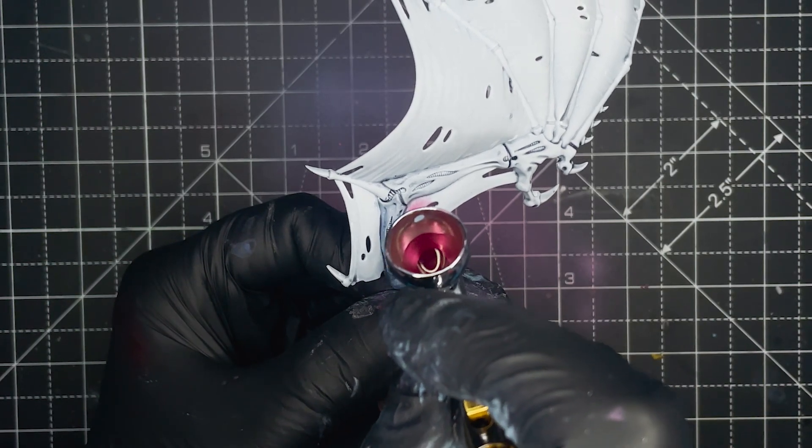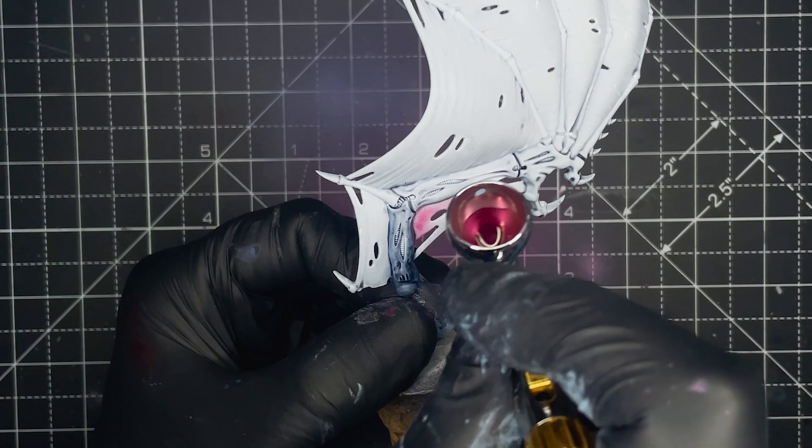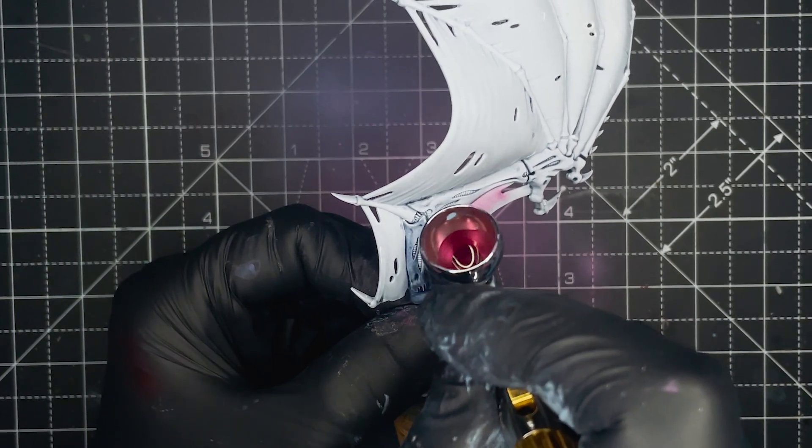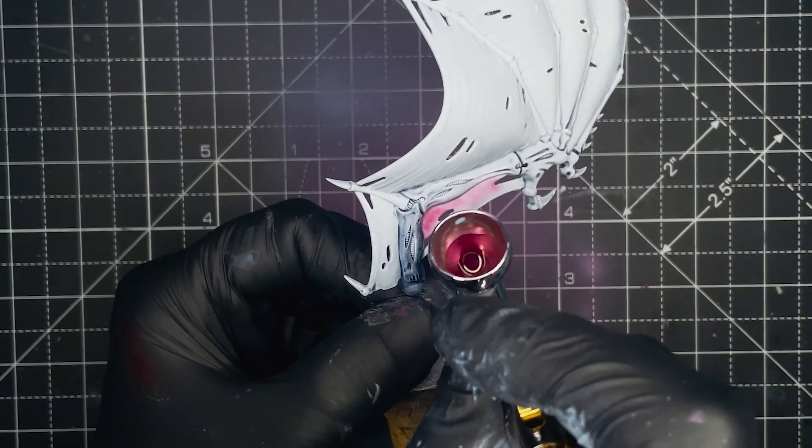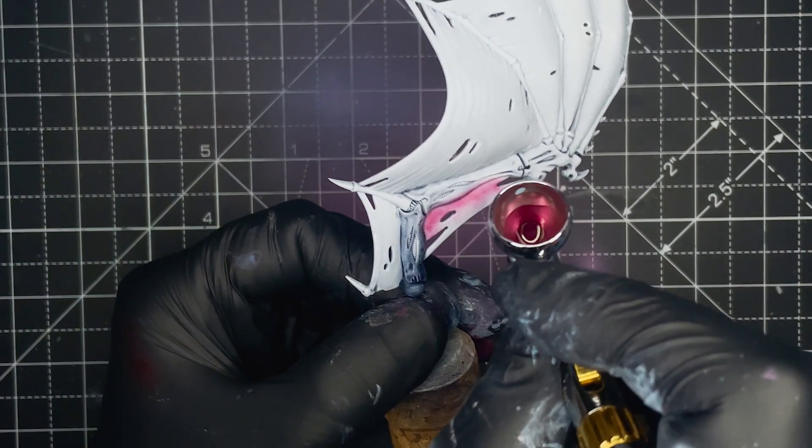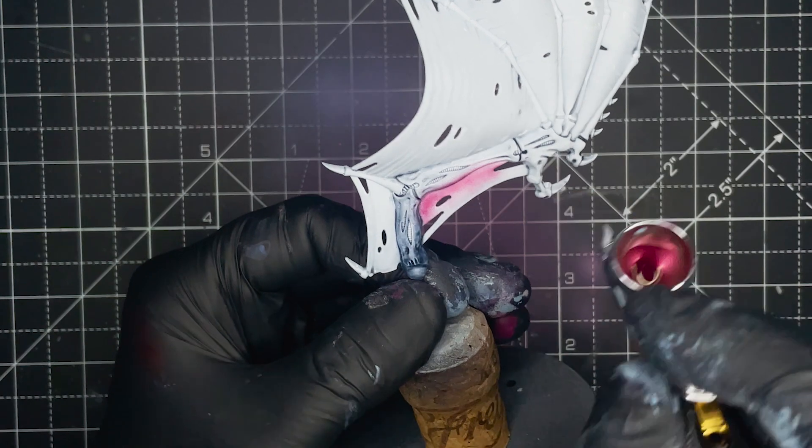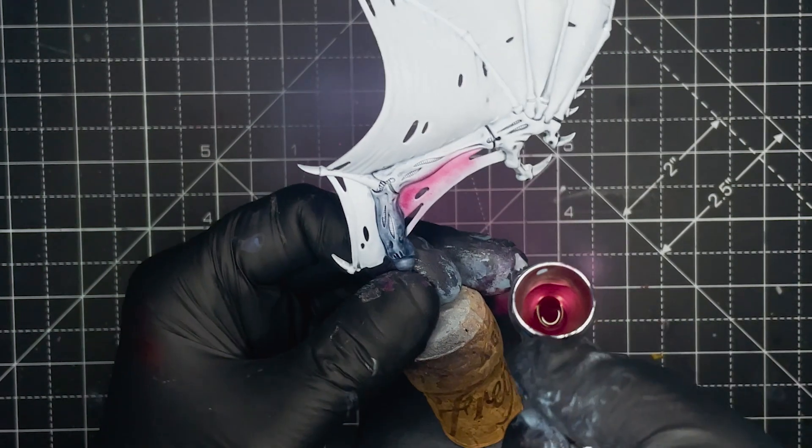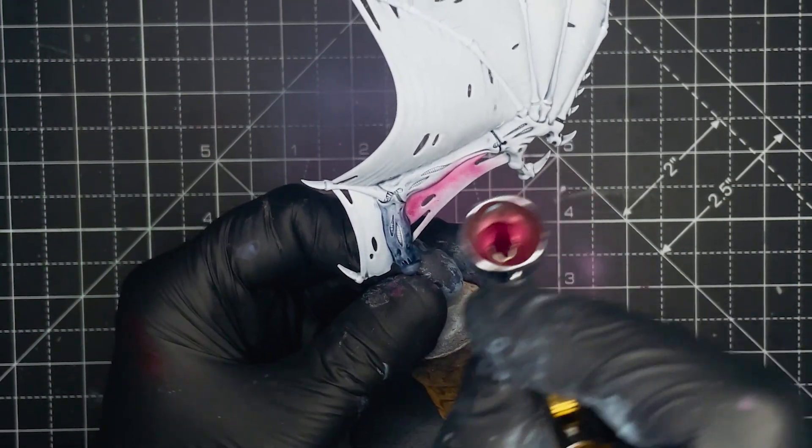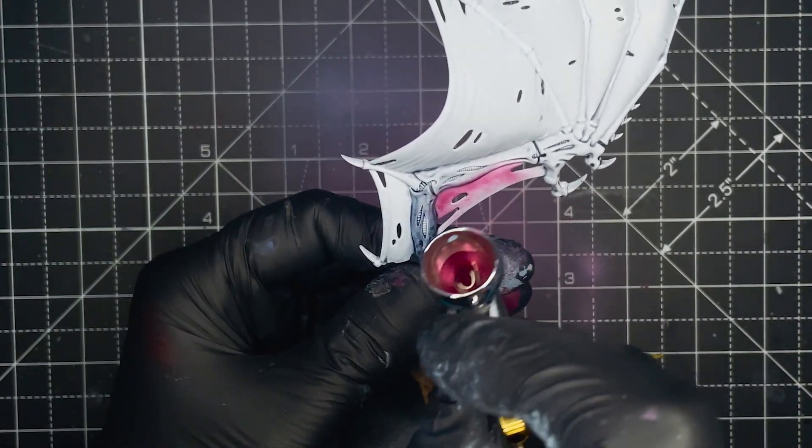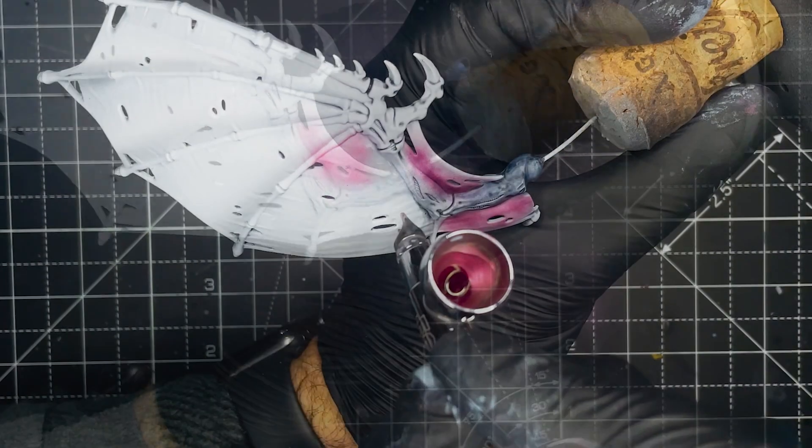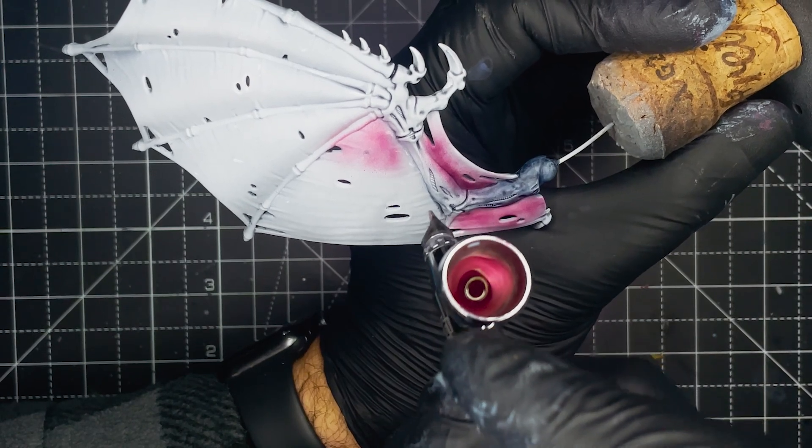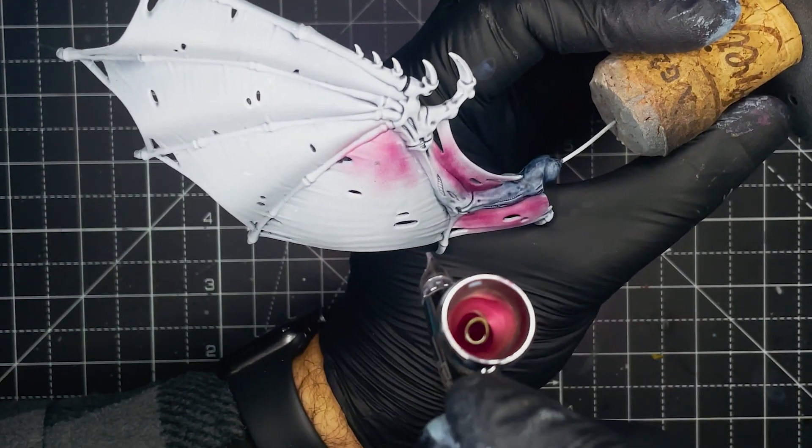So firstly we're going to be applying Volupus Pink via an airbrush. And we're going to want to hit all of the wings here covering 80% or so of each section of the wings, leaving the last 20% in white. And if possible we want to try and make it a little bit darker at the apex of where we're painting or where it's close to the fingers or spines on the model. And just make multiple light passes with the airbrush until you've got a nice even coat across all of the areas of the wings.